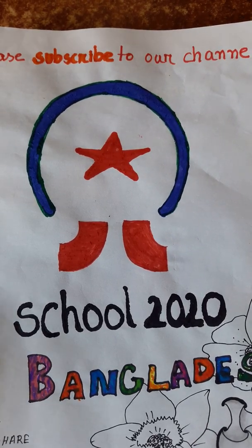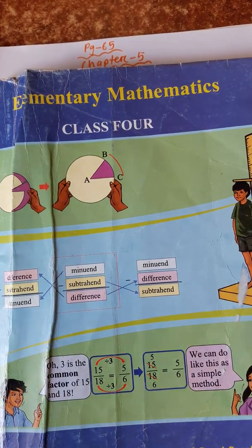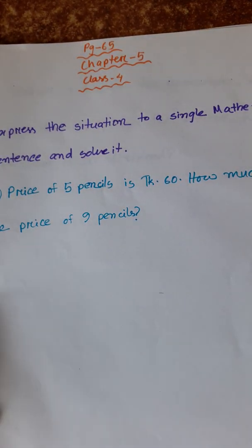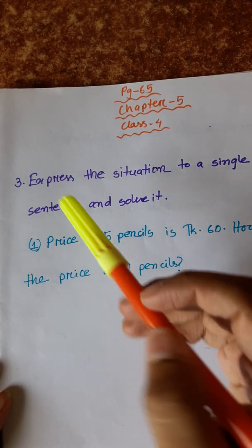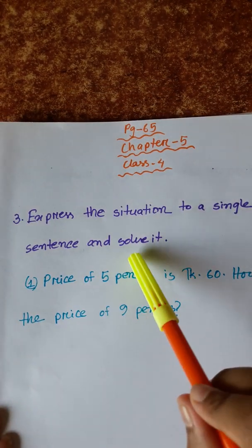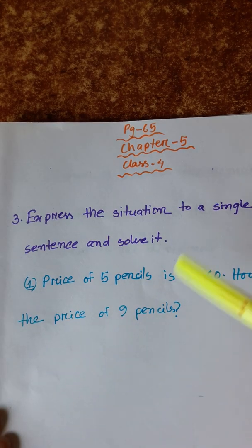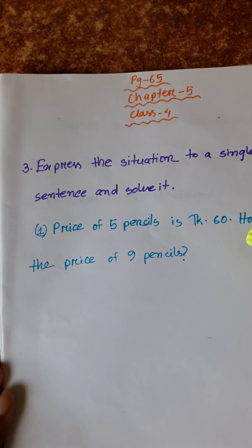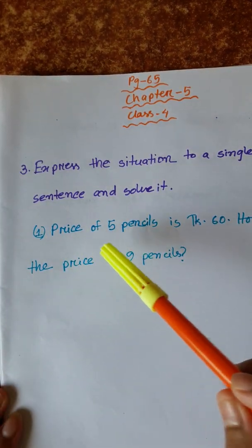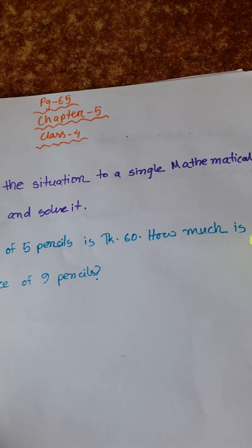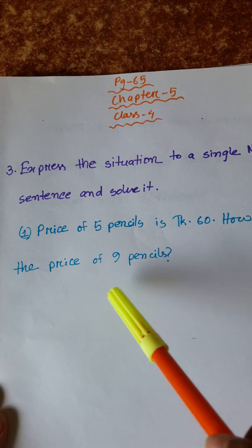Welcome to School 2020. Today we will go to Class 4, Chapter 5 for the rest of the math. We have the first question: Express the situation as a single mathematical sentence and solve it. Number 1: Price of 5 pencils is Taka 60. How much is the price of 9 pencils?